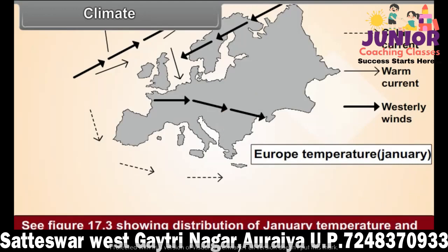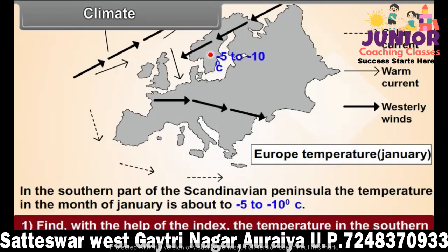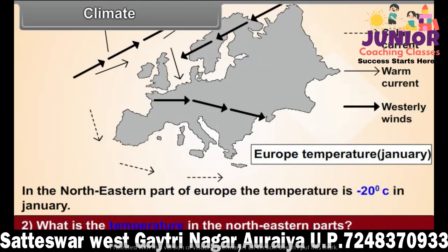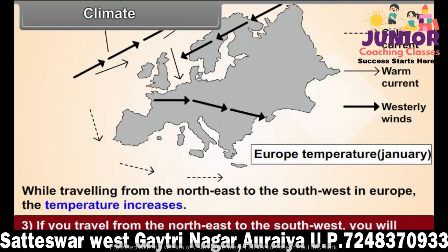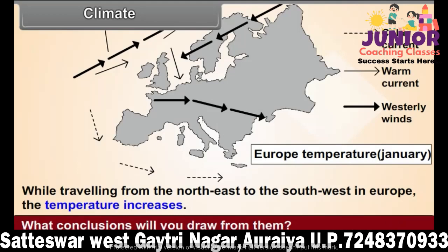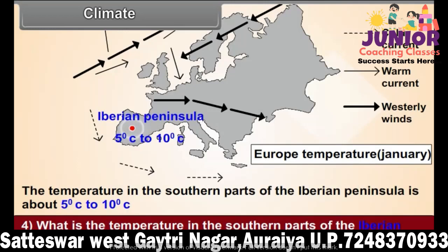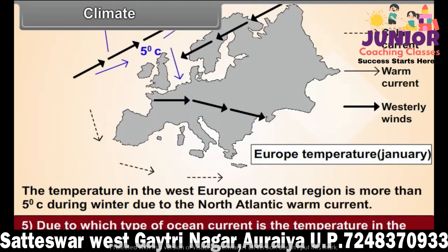See figure 17.3 showing distribution of January temperatures and answer the following. Question 1: Find, with the help of the index, the temperature of the southern part of the Scandinavian peninsula. Question 2: What is the temperature in the northeastern parts? Question 3: If you travel from the northeast to the southwest, you will come across different temperature zones. What conclusions will you draw from them? Question 4: What is the temperature in the southern parts of the Iberian peninsula? Question 5: Due to which type of ocean current is the temperature in the west European coastal region more than 5 degrees Celsius during winter?